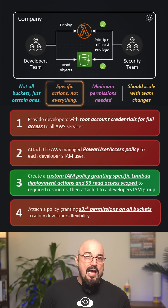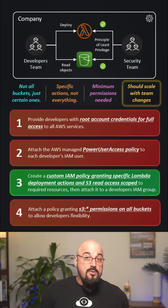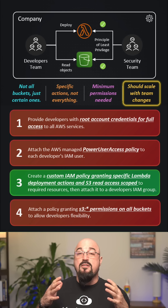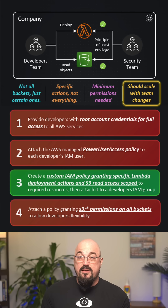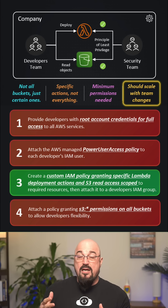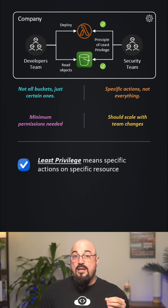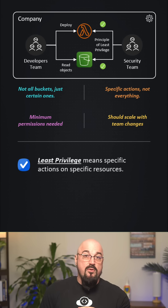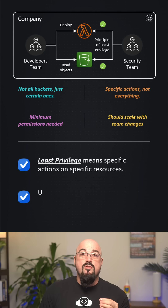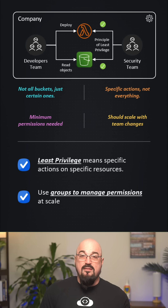Custom policies with specific actions match least privilege. It's scoped to required resources, matching specific S3 buckets. And it's attached to a group, so you can just add new developers into that group — easily matching the easy-to-manage requirement. The key takeaway: least privilege means specific actions on specific resources; use groups to manage permissions at scale; never use root credentials for daily tasks.